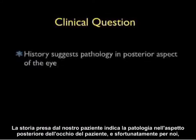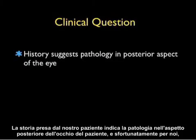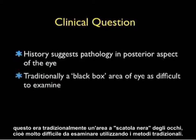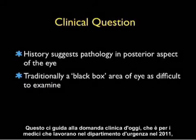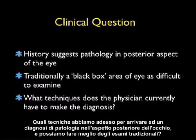The history taken from our patient suggests pathology in the posterior aspect of the patient's eye. Unfortunately, this has traditionally been a black box area of the eye, as it is very difficult to examine using traditional means. That leads us into our clinical question: for physicians working in the emergency department in 2011, what techniques do we currently have to make the diagnosis of pathology within the posterior aspect of the eye, and can we do better than our traditional testing?